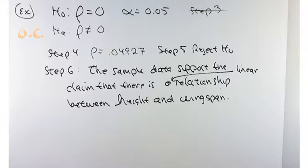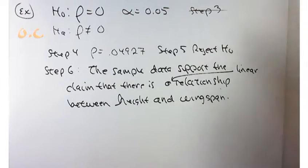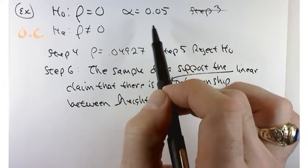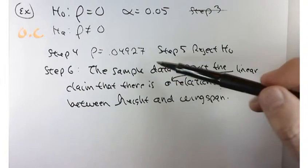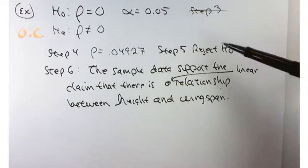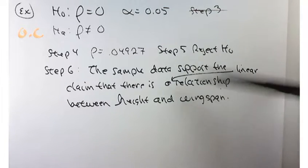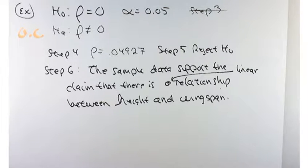Let's do another example. For these problems, the procedure is the same: set up null and alternative hypothesis, decide on alpha, get your p-value, accept or reject H₀, and state your conclusion in words. It's a new application of what we've already been doing.